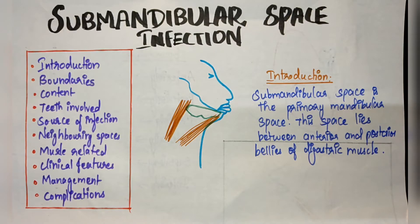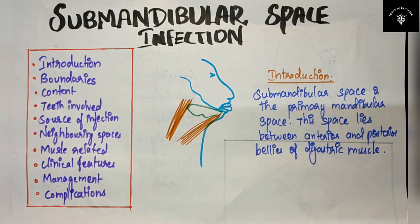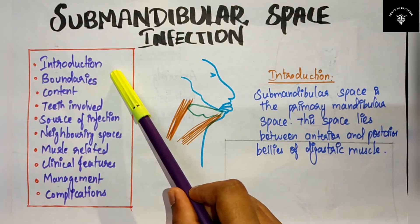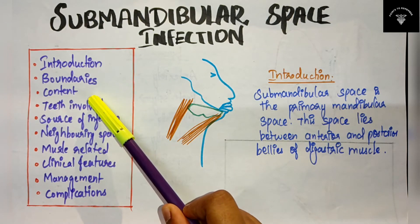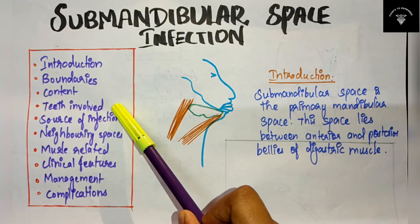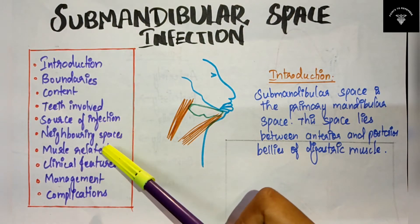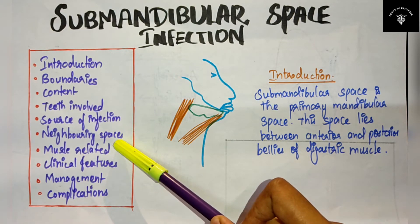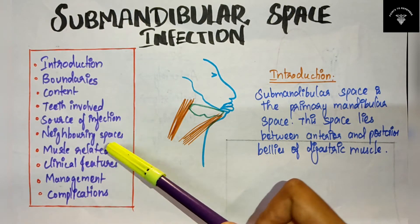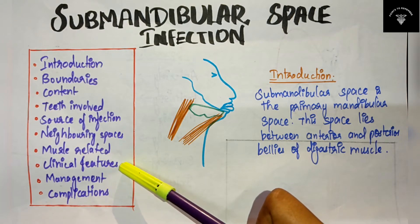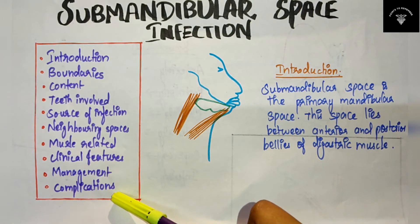Today's topic is submandibular space infection. The gist of this topic includes: first the introduction, boundaries, then the contents, what teeth are involved and the source of infection, the neighboring spaces, the important muscle related to this space, the clinical features, and finally the management and complications of submandibular space infection.